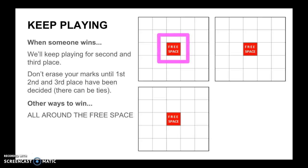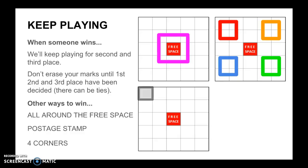We're going to win with all around the free space, with postage stamps—which is having four in one of the corners together—or with just the four corners. Those are different ways to win for round two.